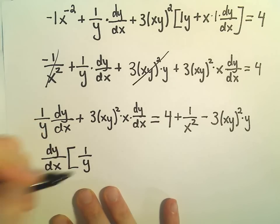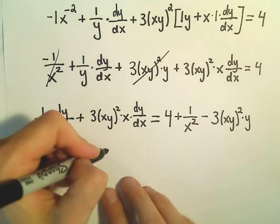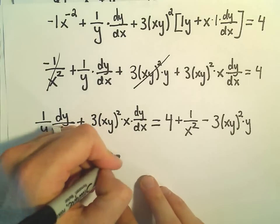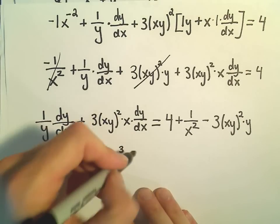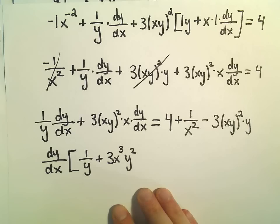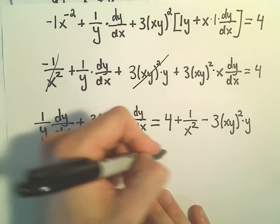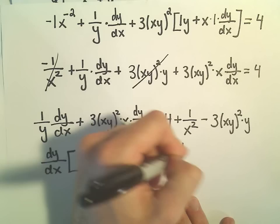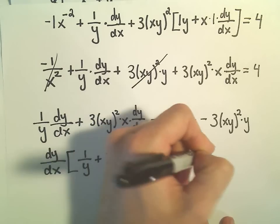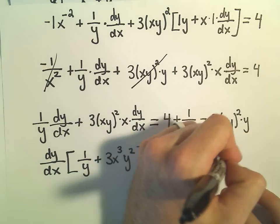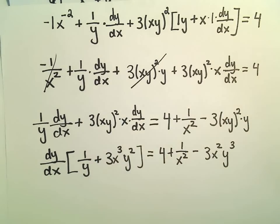We would need a 1 over y. I'm going to rewrite this a little bit so we could square both terms. So we would have x squared times x which would give us x cubed, and then y squared is just y squared. Again, we factored out the dy dx. On the right side we have 4 plus 1 over x squared. We could do the same thing. We could write this as 3 x squared, and then we would have y squared times y which would give us y to the third power.